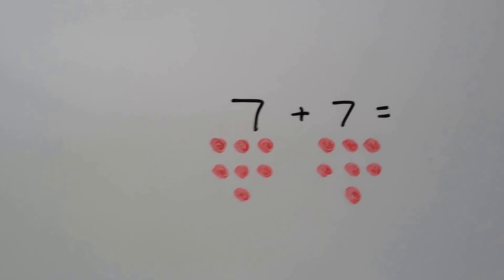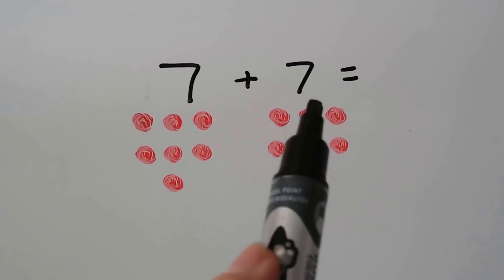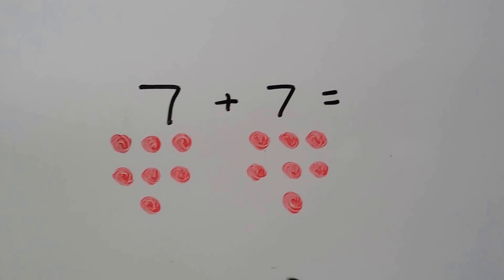Double sevens. Seven plus seven. We have seven, eight, nine, ten, eleven, twelve, thirteen, fourteen.